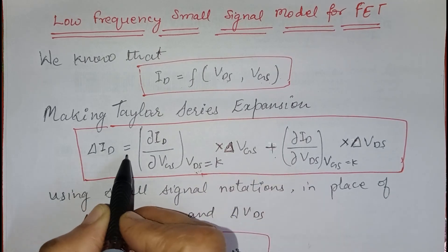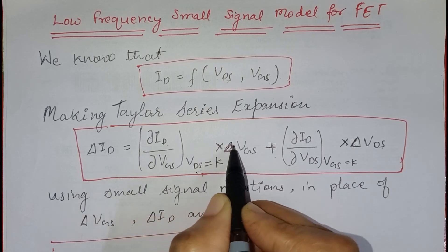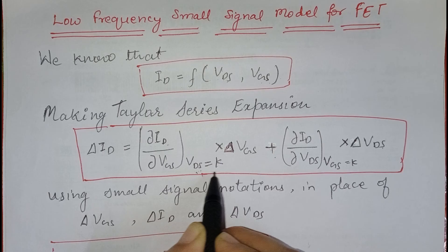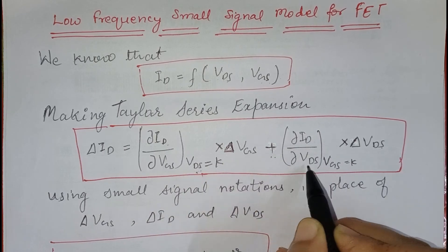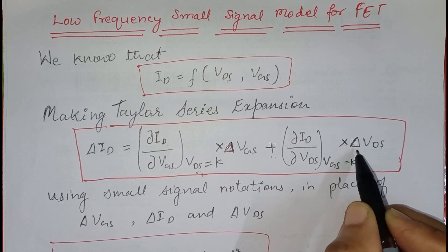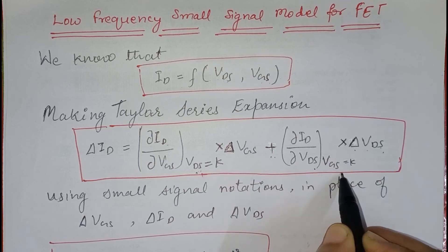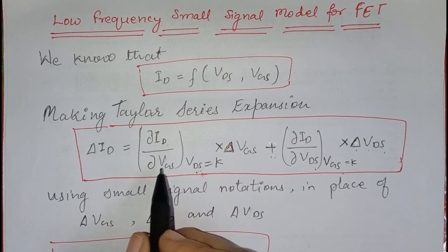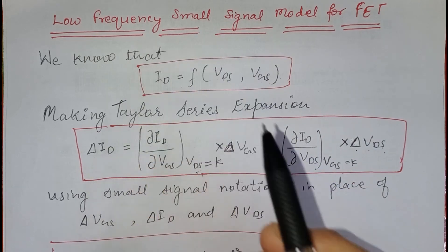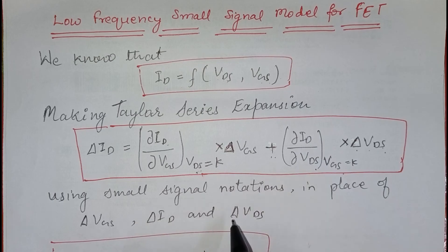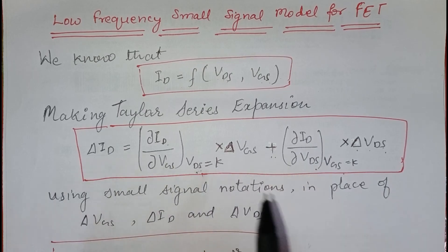The Taylor series expansion is: delta ID equals (del ID / del VGS) multiplied by delta VGS at a constant value of VDS, plus (del ID / del VDS) multiplied by delta VDS at a constant value of VGS. Since we are using the small signal model of low frequency, we will use small signal notations instead of these DC signal notations.